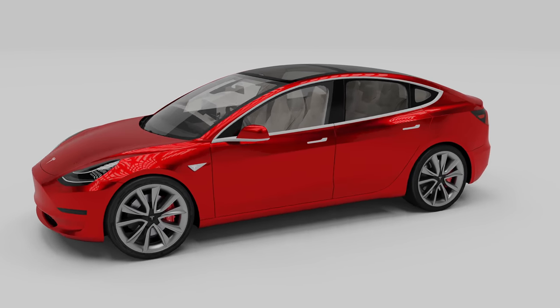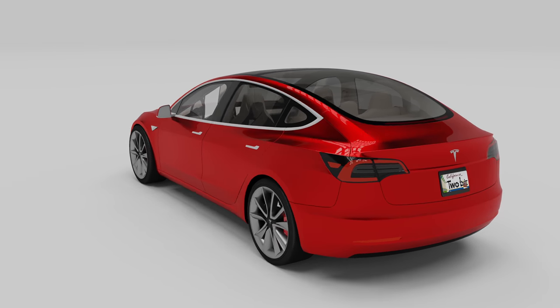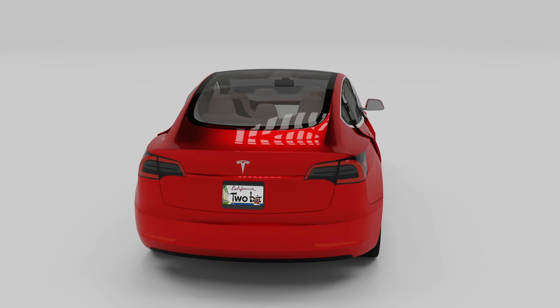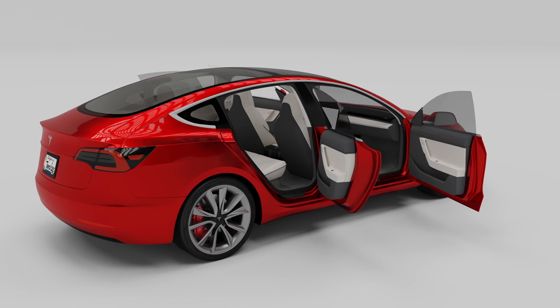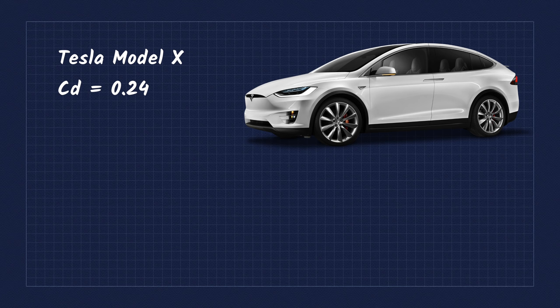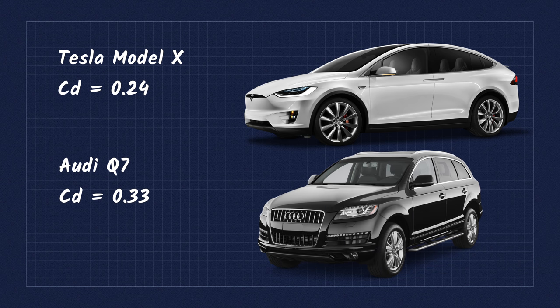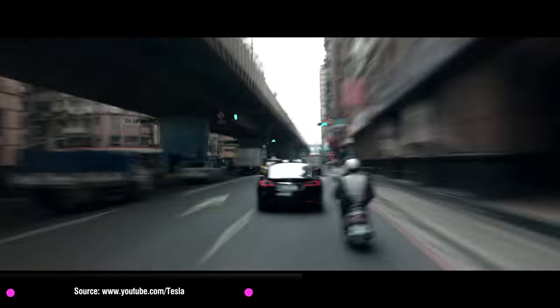Teslas have flush mount door handles, wind tunnel tested side mirrors, and all their cars are top of the class when it comes to aerodynamic efficiency. To put this in context, the biggest and bulkiest Tesla, the Model X, has a drag coefficient of 0.24 while a similar Audi Q7 has a drag coefficient of 0.33. So the smoother and less interrupted front end of EVs help with this.